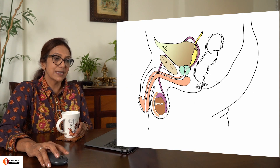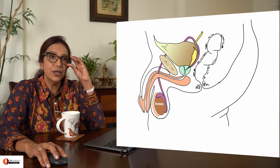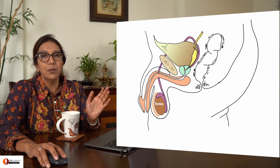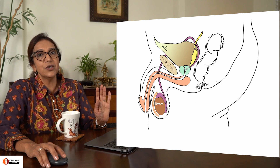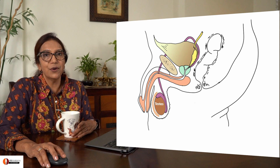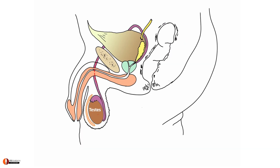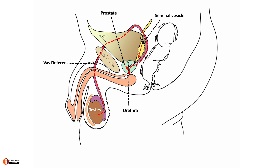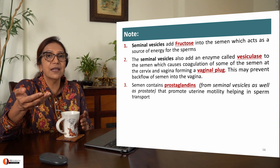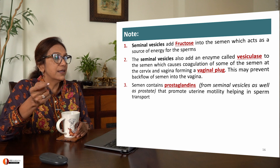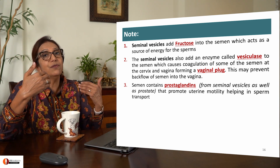I have given you a lot of theory in this lecture which I expect you to pause and read — I won't be teaching it; I will be teaching on images. The testes produces sperms which travel through the vas deferens to the male urethra. There, the seminal vesicles and the prostate release their own secretions into the semen, forming a bulk of about 2 to 6 ml which is released into the female vagina. The seminal vesicle adds fructose to give energy to the sperms, and also adds vesiculase. The semen also contains prostaglandins, which cause the uterine musculature to contract and help in the movement of sperms.